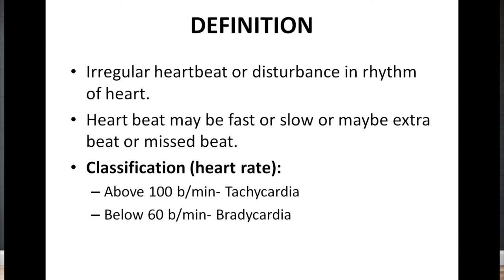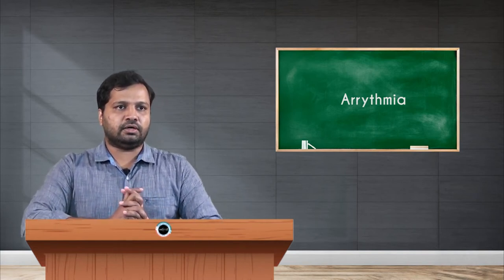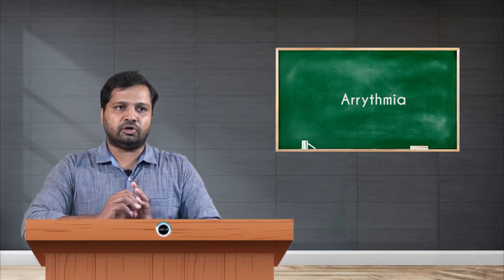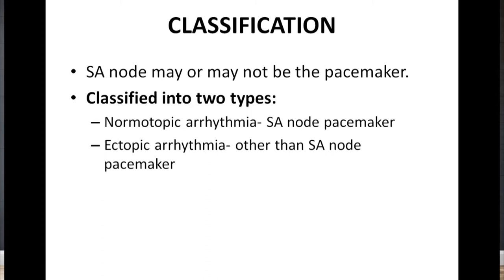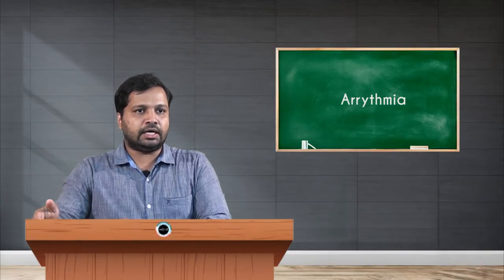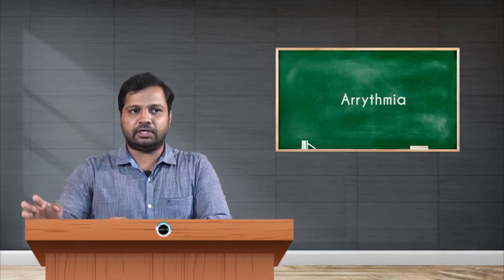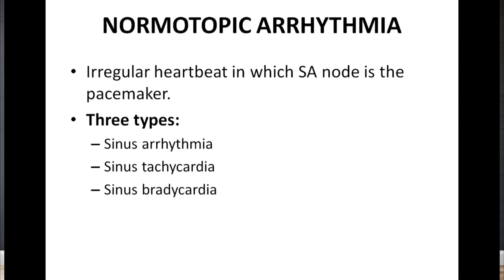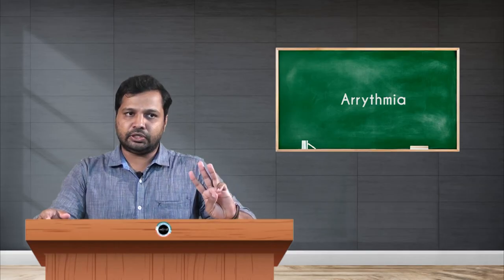According to whether the SA node acts as pacemaker, arrhythmia is classified into two types: normotypic arrhythmia and ectopic arrhythmia. In normotypic arrhythmia, the sinoatrial node is still the pacemaker of the individual. In ectopic arrhythmia, other than the SA node will be acting as the pacemaker. Today we will briefly cover both normotypic arrhythmia and ectopic arrhythmia.